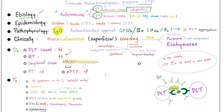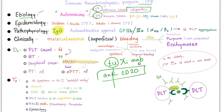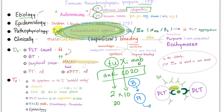Rituximab is an anti-CD20 monoclonal antibody. The mnemonic: Rituximab has 'tu' (2), 'x' (Roman numeral 10), so 2 times 10 equals 20 — it's anti-CD20. The 'i' indicates it's chimeric, not humanized, and 'mab' stands for monoclonal antibody. CD20 is found on B-lymphocytes, which become plasma cells that secrete the IgG antibodies. Other drugs include Eltrombopag, which boosts thrombocytes (platelets), and Romiplostim — both are TPO receptor agonists. TPO stands for thrombopoietin.